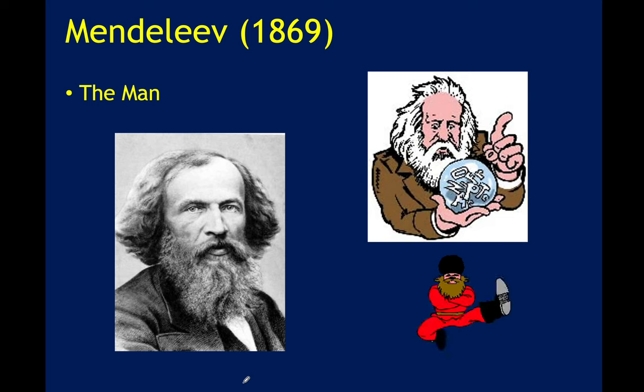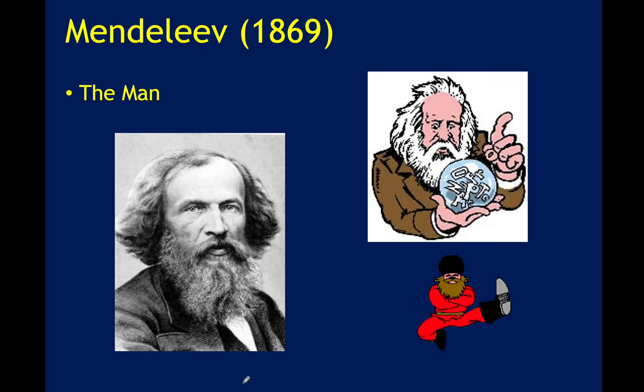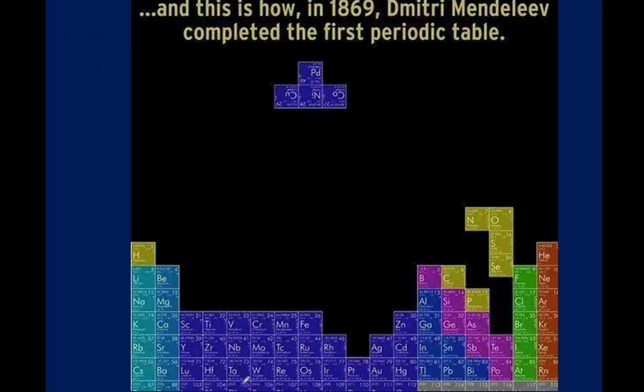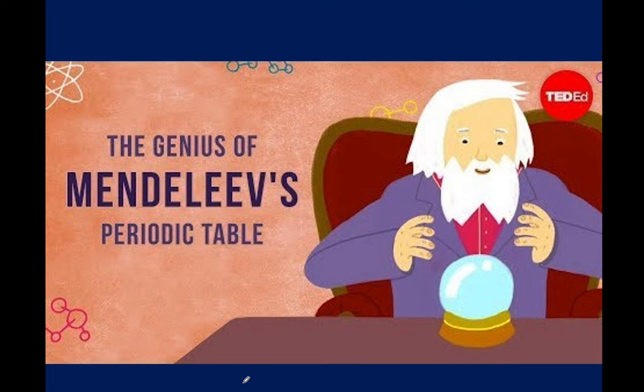We then get to Dmitry Mendeleev, a Russian scientist who came up with his idea of a periodic table as a pure thought experiment. It is ridiculously clever — this is essentially Dmitry working out how to put his periodic table together in 1869.